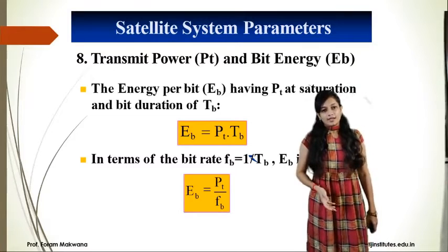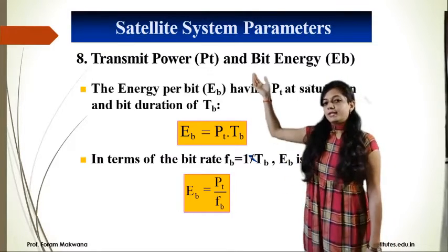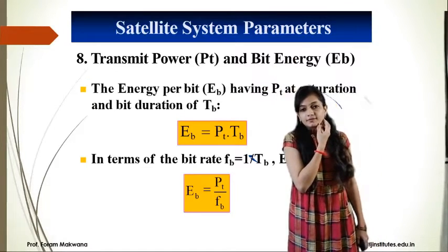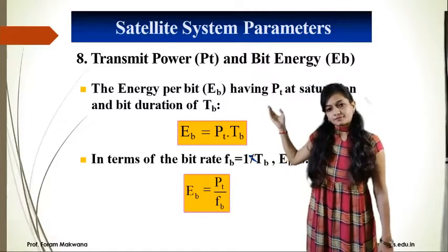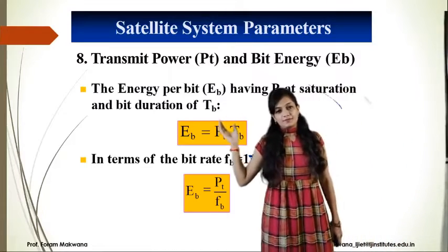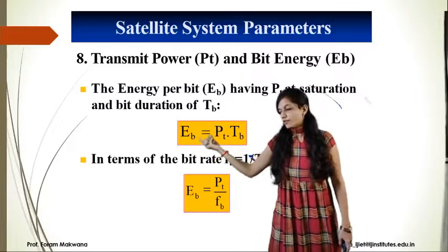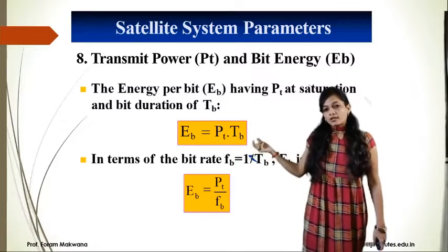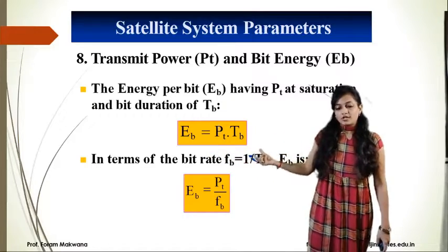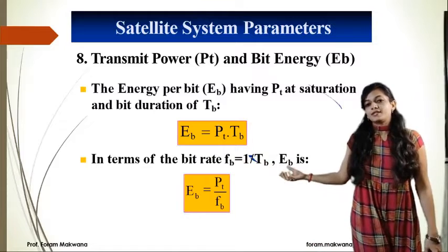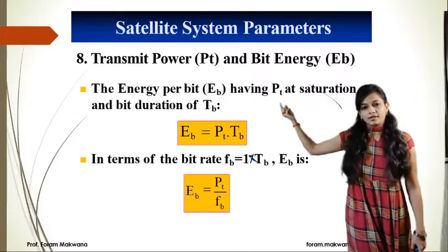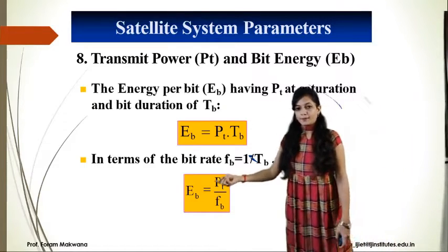The other parameters relate to transmitted power and bit energy Eb. The energy per bit is obtained using the transmitted power at saturation and the bit duration. Eb equals transmitted power Pt into bit duration Tb. In terms of bit rate Fb, Fb = 1/Tb, so Eb = Pt / Fb. Eb is the bit energy related to transmitted power.